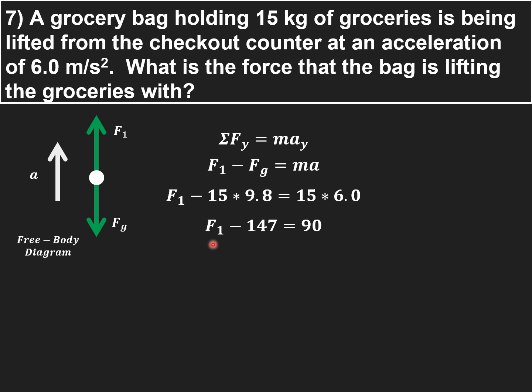So force one, that applied force minus 147 is going to be equal to 90. So we add 147 to the other side. We get a total force upward of 237 newtons.